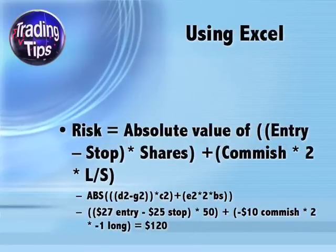To Risk is the most you could lose, assuming you don't have a gap on your stop loss. To find this, subtract your stop loss from your entry price, multiply the difference by the number of shares, then add the commission times two — since you'll pay commissions when you buy and when you sell. Ultimately you need to take the absolute value of the result, which means a negative number will read the same as a positive one.